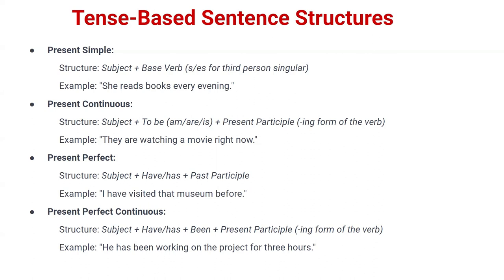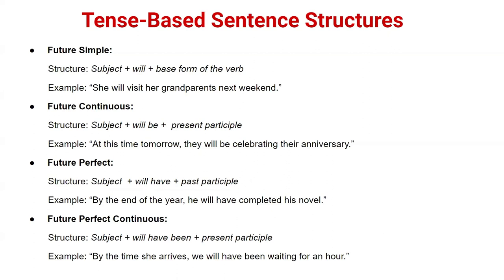Now let's understand present perfect continuous: subject + have/has + been + present participle (verb+ing). We add 'ing' to the verb.